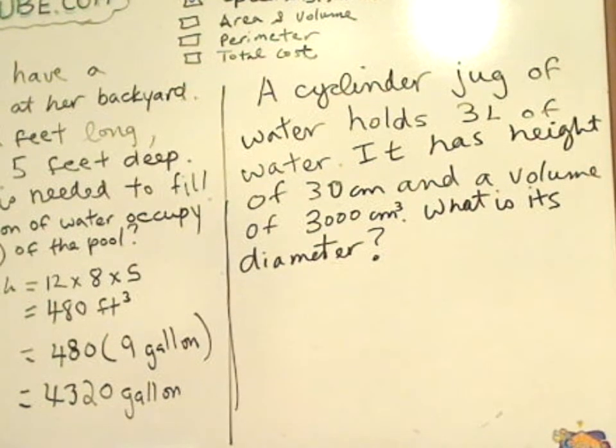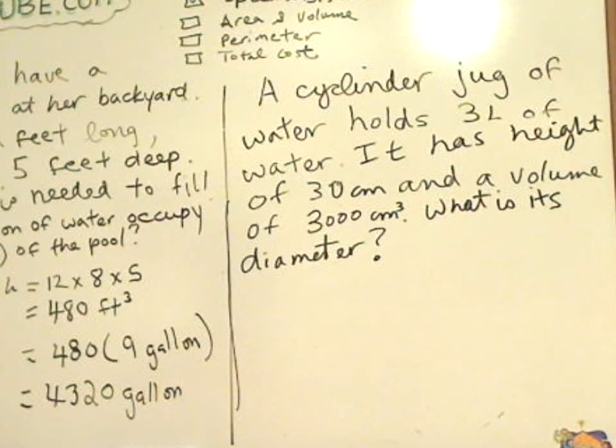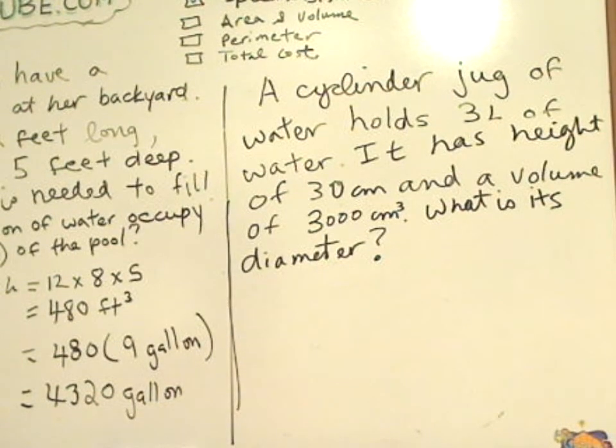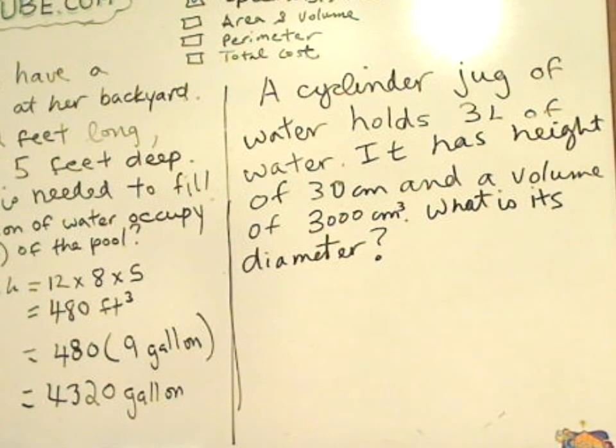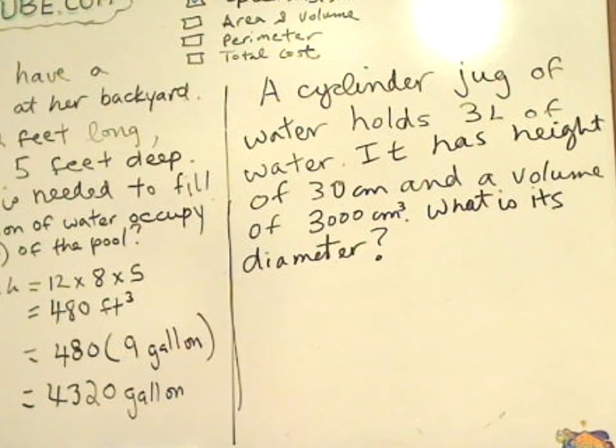A cylinder jug of water holds 3 liter of water. It has a height of 30 centimeter and a volume of 3,000 cubic centimeter. What is its diameter? So I want you to pause the video and give it a try and we'll take it up.